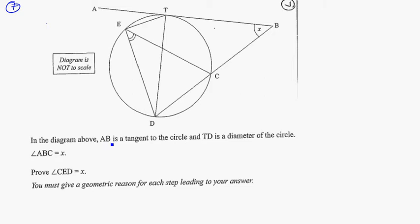In the diagram above, AB is tangent to the circle and TD is the diameter of the circle. So a couple of things I notice. There's a little dot there that's indicating to me this is going through the center. So that's my diameter. So I know that if I have a diameter, I know that the angle in the corner is going to be 90 degrees for that triangle.